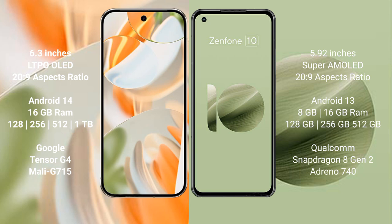Google Pixel 9 Pro runs on the Android 14 operating system, while Asus Zenfone 10 runs on Android 13. The Google Pixel 9 Pro offers 8 or 16 GB RAM with 128GB, 256GB, 512GB, or 1TB internal storage options.